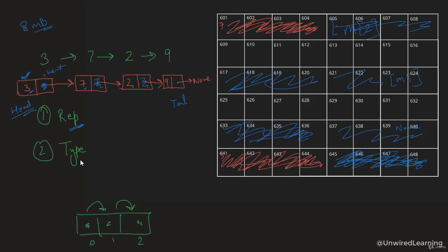There are two types of linked lists. The first is a singly linked list, and the second is a doubly linked list. In a singly linked list, we flow from left to right using dot next — from 3 to 7 to 2 to 9.